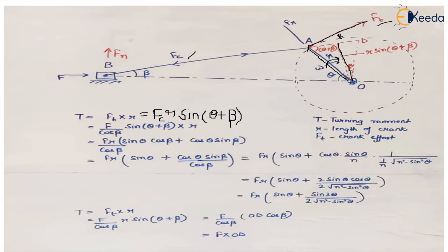We extend BA to point R. This angle is the exterior angle of the triangle, so its value is the sum of interior opposite angles: θ + β. If AO is R, the value of RO becomes R sin(θ + β). So Fc × R sin(θ + β) = Ft × R.